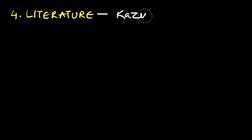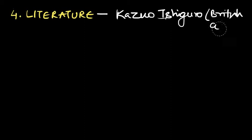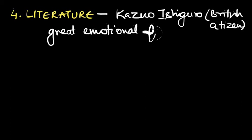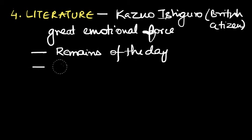The fourth field for which a Nobel Prize is given is literature and this year's prize was given to a man named Kazuo Ishiguro. By his name we may think that he is from Japan but he is a British citizen and his writings are said to have great emotional force. A few of his books are: Remains of the Day and Never Let Me Go.